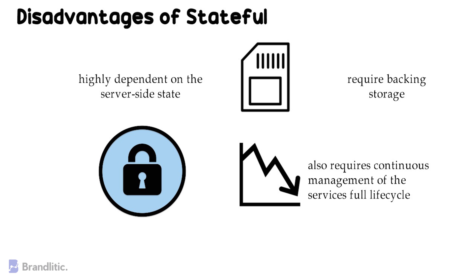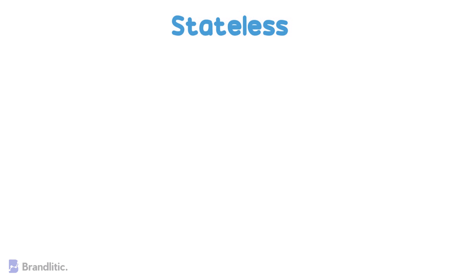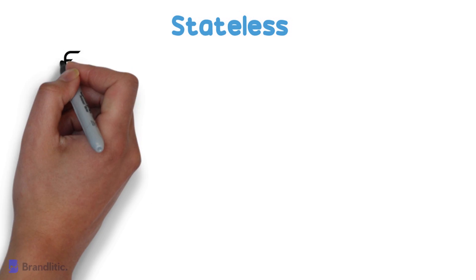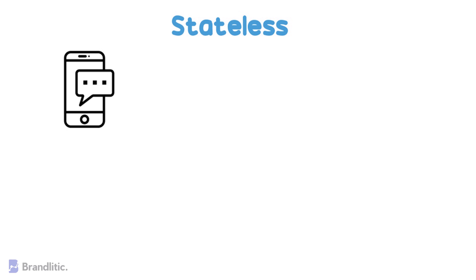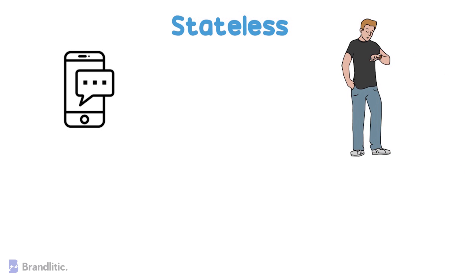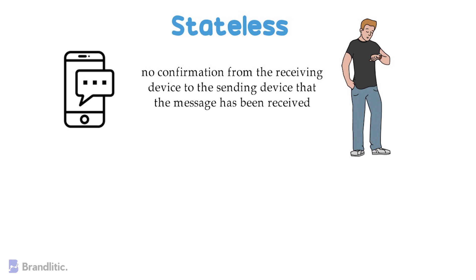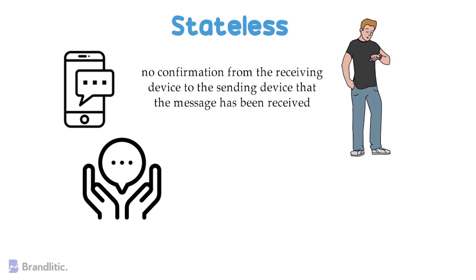Now that we know about stateful protocols, let's understand what a stateless protocol is. For a better understanding, let's consider the event of sending an SMS. In such an event, the receiver's availability is not confirmed, and the sender just sends the SMS to the recipient. There is no confirmation from the receiving device to the sending device that the message has been received. Despite being transmitted, there is no knowing whether communication may or may not be received fully.